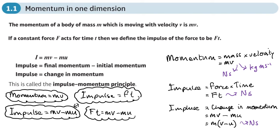Whenever we do any of these types of questions, it's really important that we draw diagrams where you put the forces on and the velocity and impulse. When you do your diagrams, direction is really important. Make sure you have arrows pointing in the right direction — take a direction as positive, and anything not in that direction will be taken as negative.